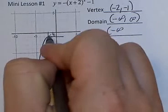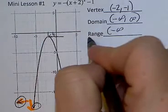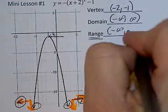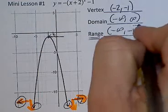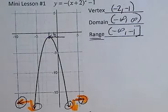And this y value, y value because we're working with range, is -1. Negative 1 is part of this function as a y value, so we put a bracket in that place.